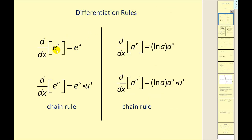If our base is e, the derivative of e to the x is equal to e to the x. This is actually quite amazing — this function is its own derivative, meaning if we evaluate the function at a given value of x, the function value also tells us the slope of the tangent line at that x value.